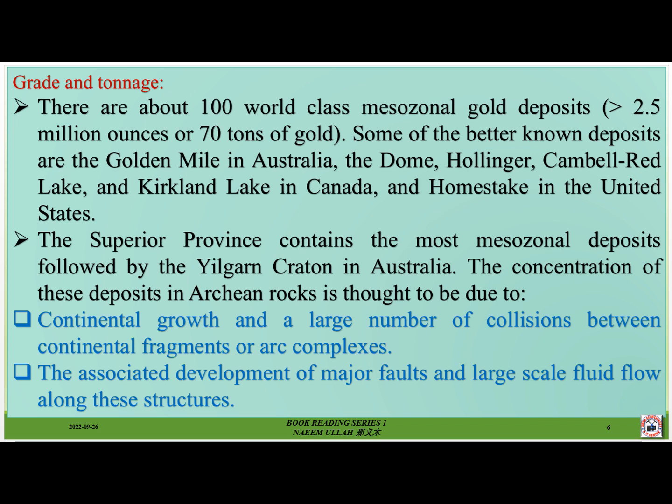There are about 100 world-class mesozonal gold deposits greater than 2.5 million ounces or 70 tons of gold. Some of the better known deposits are the Golden Mile in Australia, the Dome, Hollinger, Campbell, Red Lake, and Kirkland Lake in Canada, and the Homestake in the United States. The Superior Province contains the most mesozonal deposits, followed by the Yilgarn Craton in Australia. The concentration of these deposits in Archean rocks is thought to be due to continental growth and a large number of collisions between continental fragments or arc complexes, and the associated development of major faults and large-scale fluid flow along these structures.